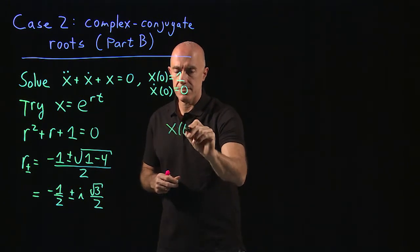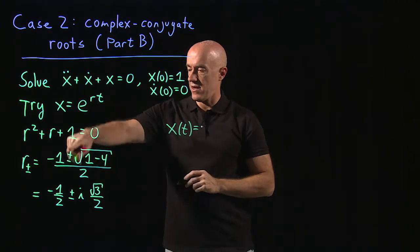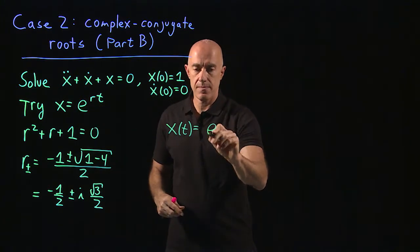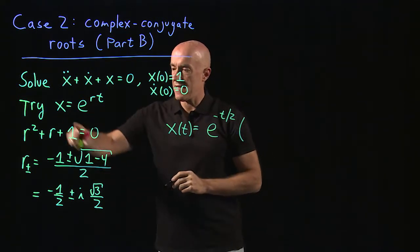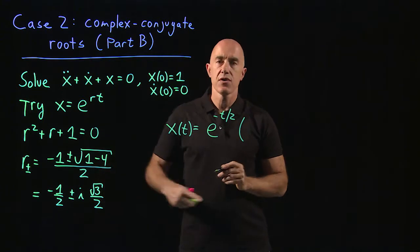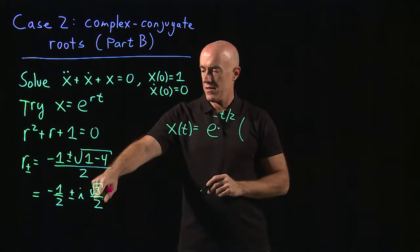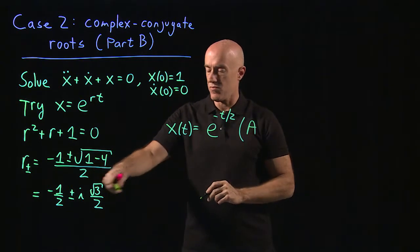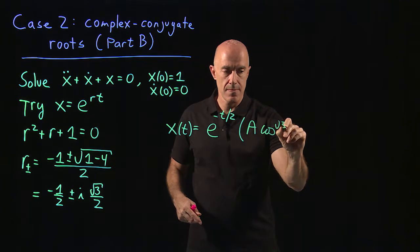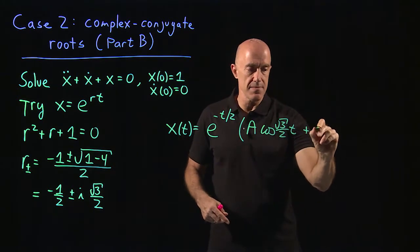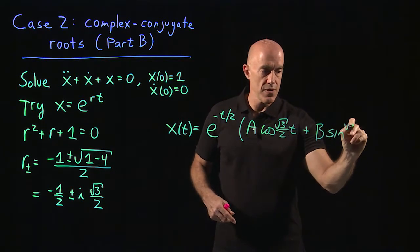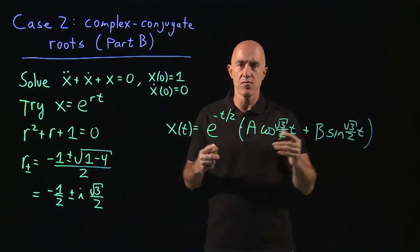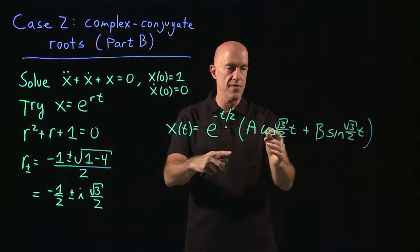a real exponential function in both terms, so e to the minus t over 2. The imaginary part of r goes as the frequency in the cosine and the sine terms. So we have a constant a times cosine of root 3 over 2 times t, plus another constant b times sine of root 3 over 2 times t. And that's the general solution in the case of complex conjugate roots.